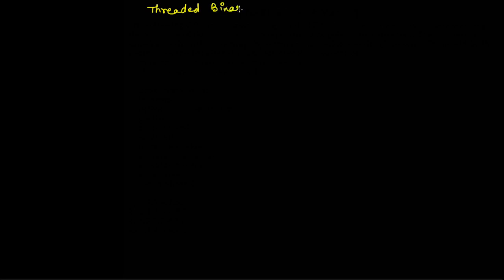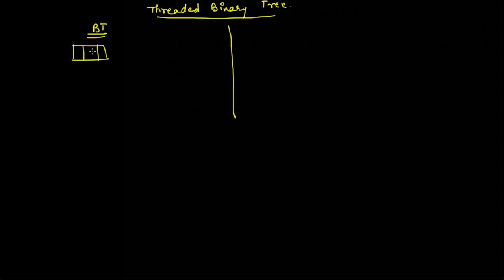The next topic is threaded binary tree. What is the difference between a binary tree and a threaded binary tree? Let us suppose we are having a binary tree. The root node is storing 1. The left subtree for this root node is storing 10 and the right subtree is storing 13.